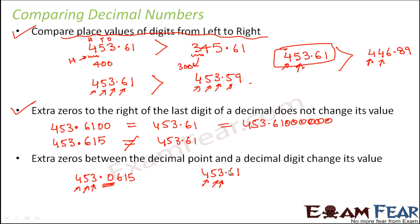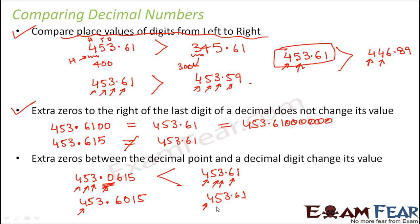Comparing 453.61 and 453.0615: starting from the left — 4 and 4 same, 5 and 5 same, 3 and 3 same. After the decimal point, the first digit here is 6 and the first digit there is 0. You cannot ignore this zero because it lies between the decimal point and the decimal digit, so 453.61 is bigger. Similarly for 453.6015 versus 453.61: going digit by digit — 6 and 6 same, then 1 versus 0, so 1 is greater and 453.6015 is smaller. You cannot ignore zeros between decimal digits. Only zeros located at the very end of a decimal number don't add value and can be ignored.